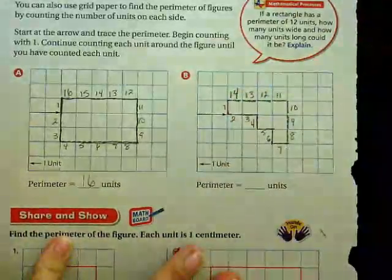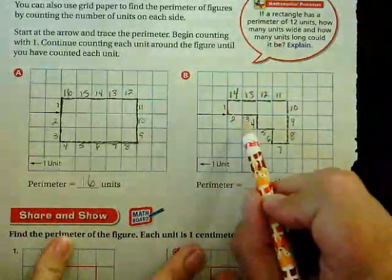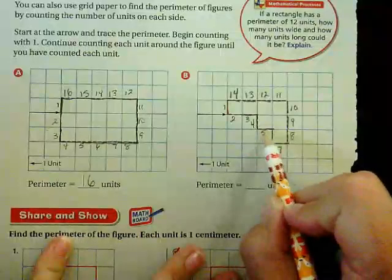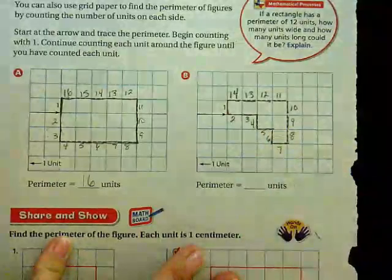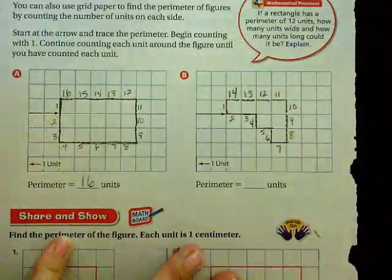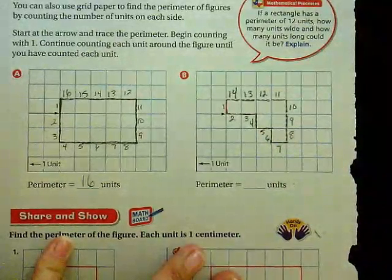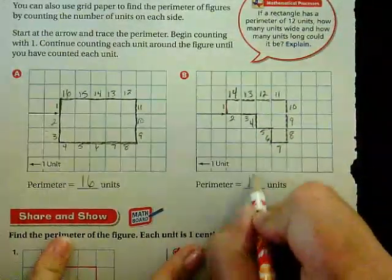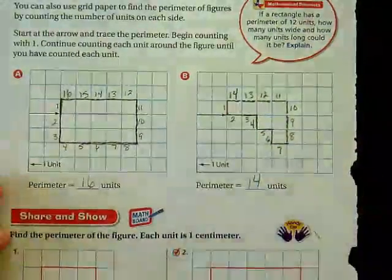13, 14 units. See how over here we have 3 and 4, 5 and 6. You have to count each unit as a number. Don't miss any. So this figure is 14 units.